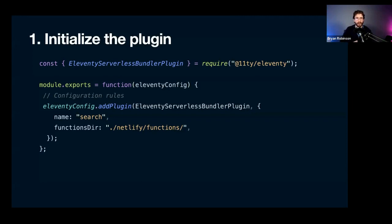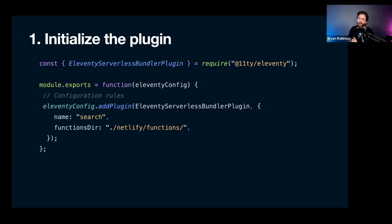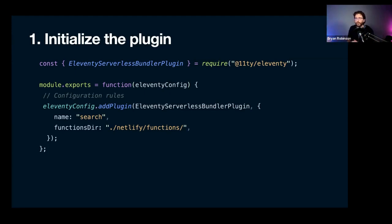So we're going to dive into Eleventy serverless. To start, we need to go into our Eleventy config file — the .eleventy.js — and initialize this plugin. At the top of your file, you require the Eleventy serverless bundler plugin from the actual Eleventy package — it ships with it in the 1.0 betas. If you're using 0.12, you're not going to have this. Then inside our export we use the addPlugin method on the Eleventy config object, passing in the Eleventy serverless bundler plugin. My functions happen to be in my Netlify folder in the functions directory.